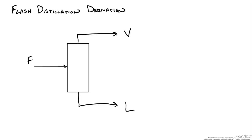One way that flash distillation occurs is when we start with a pressurized liquid feed that is heated and flashed adiabatically across a valve to a lower pressure, resulting in a vapor phase and a remaining liquid phase. If the valve is omitted, we could start with a liquid that is partially vaporized using a heater, or start with a vapor that is partially condensed to form the liquid.